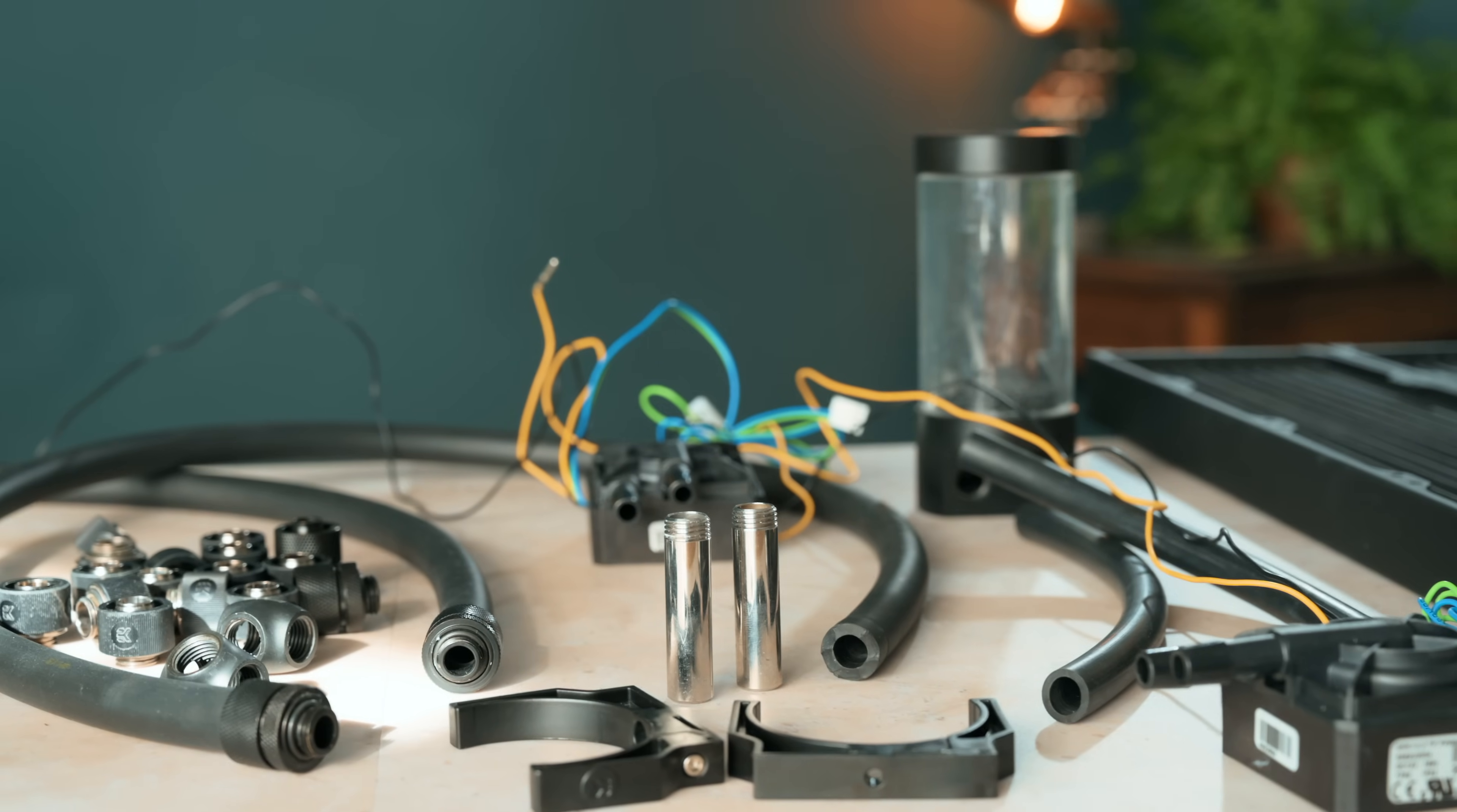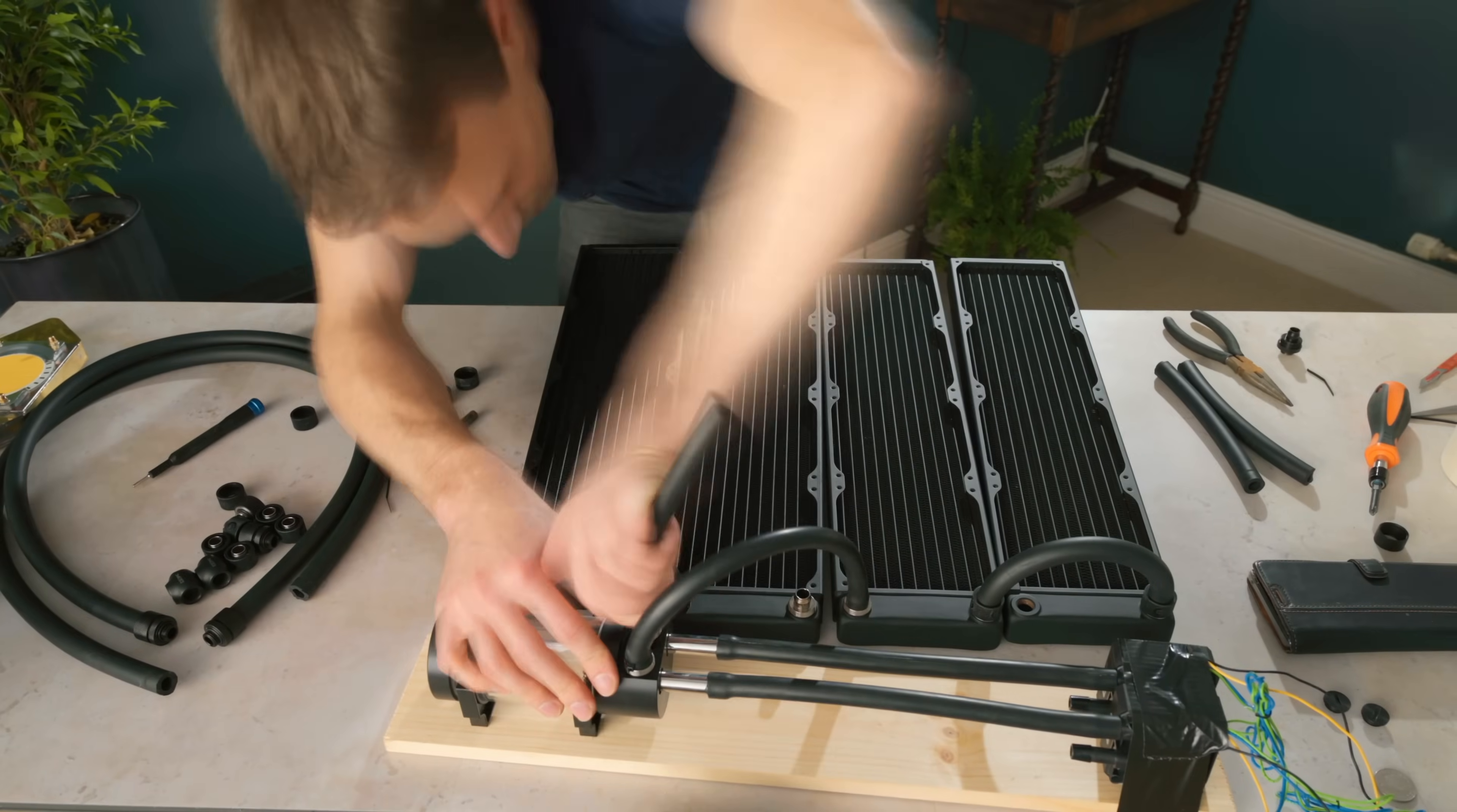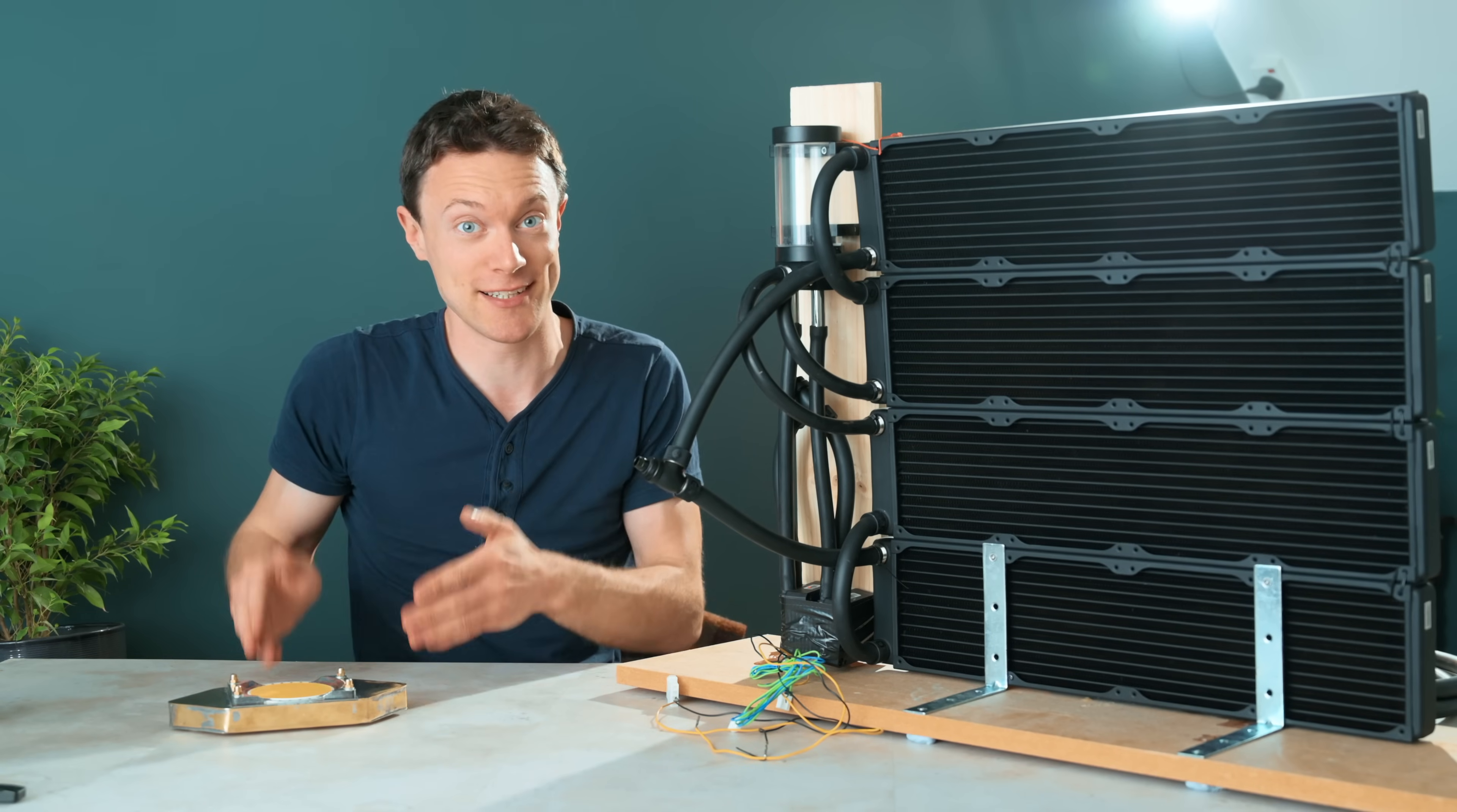With the LED now successfully mounted onto the water block I need to make some sort of water loop so that the water can be pumped through this and take the heat away from it. For this I'm using a variety of standardized components so that I can put it together quickly. This looks pretty ropey but it's just something temporary so we can test this LED out.